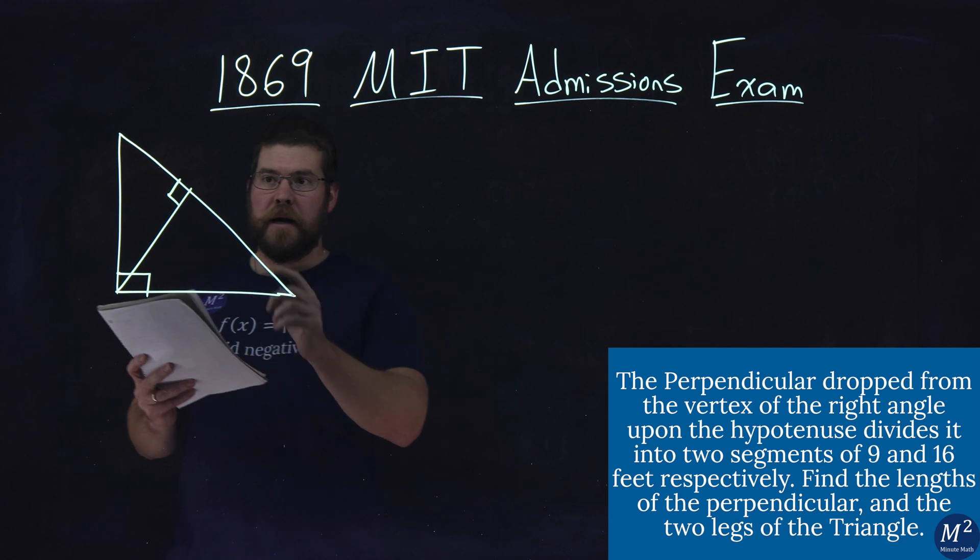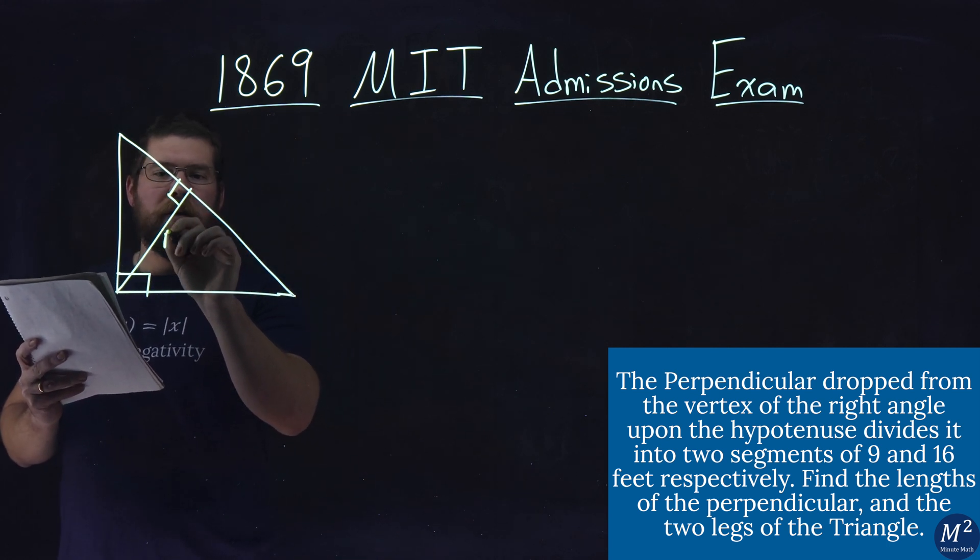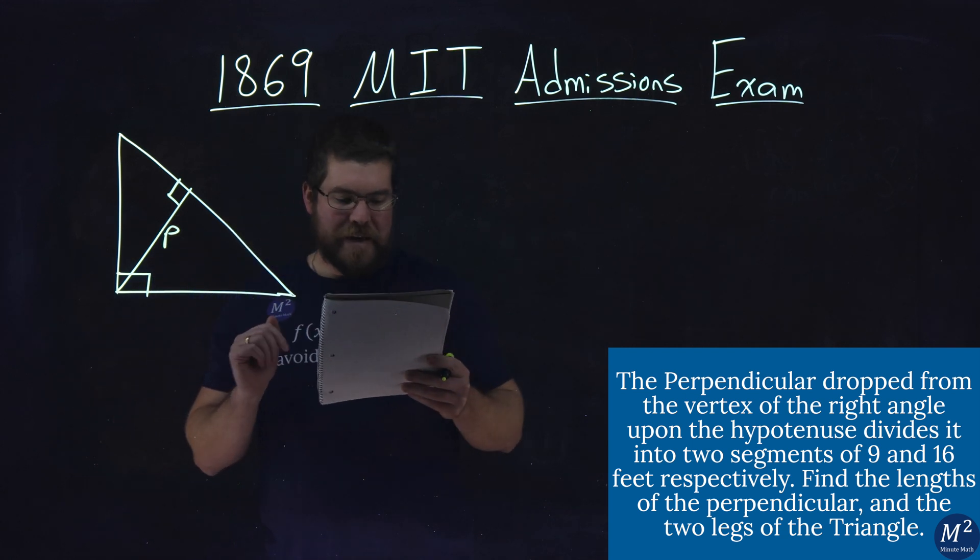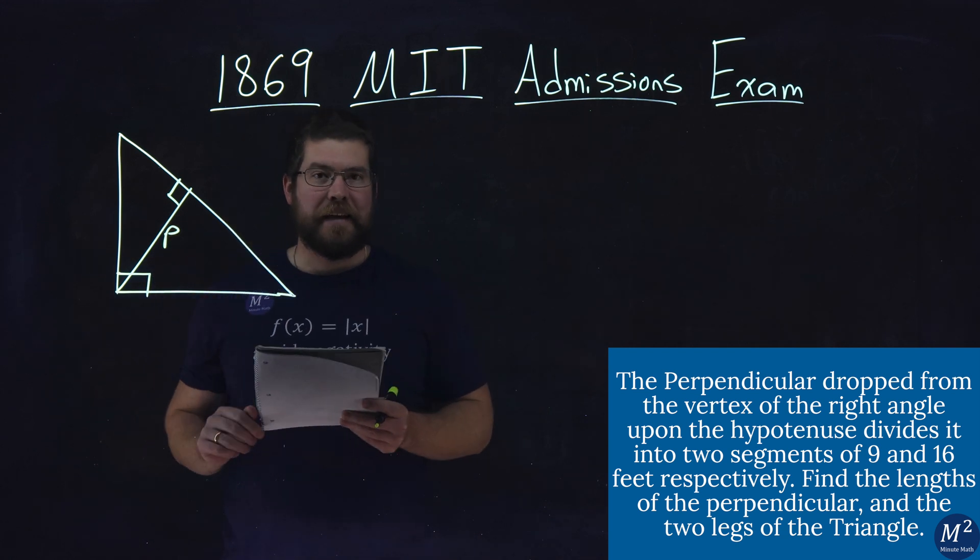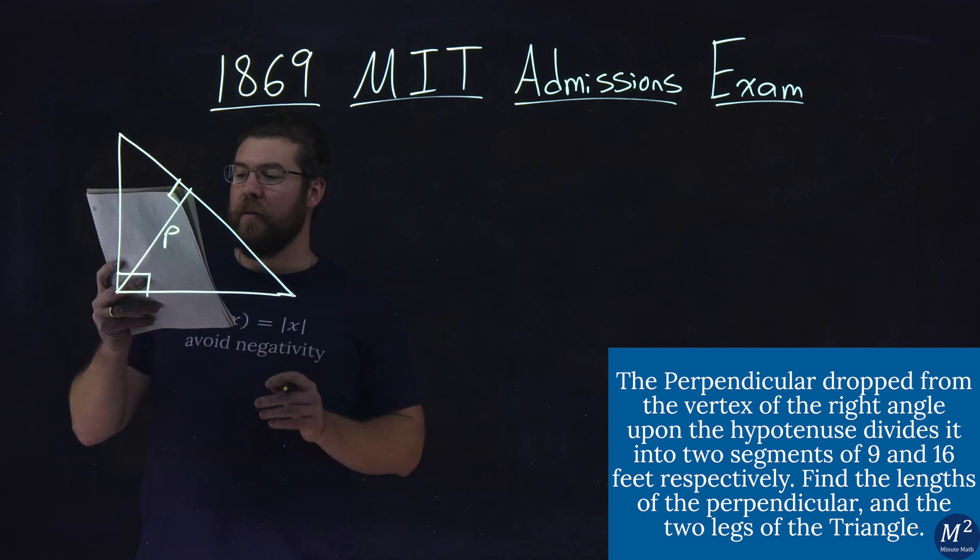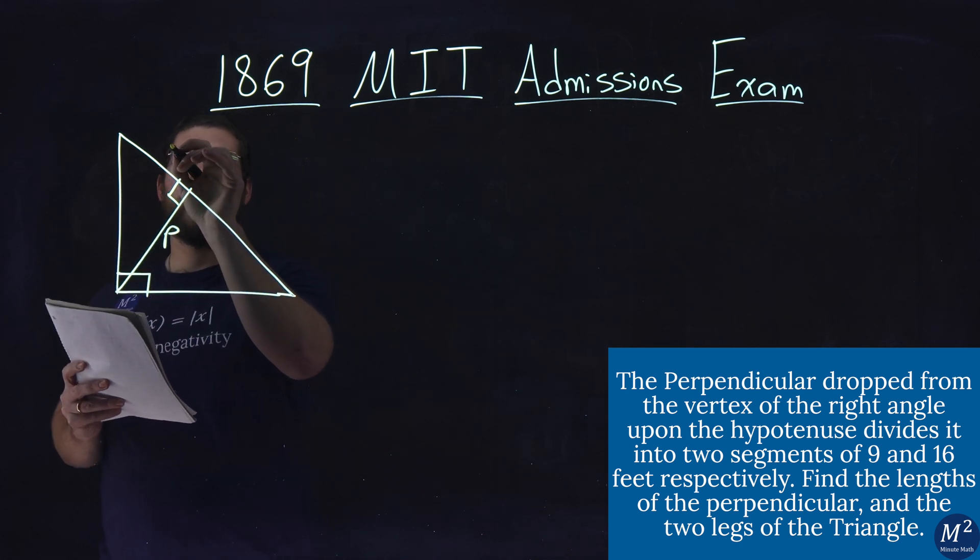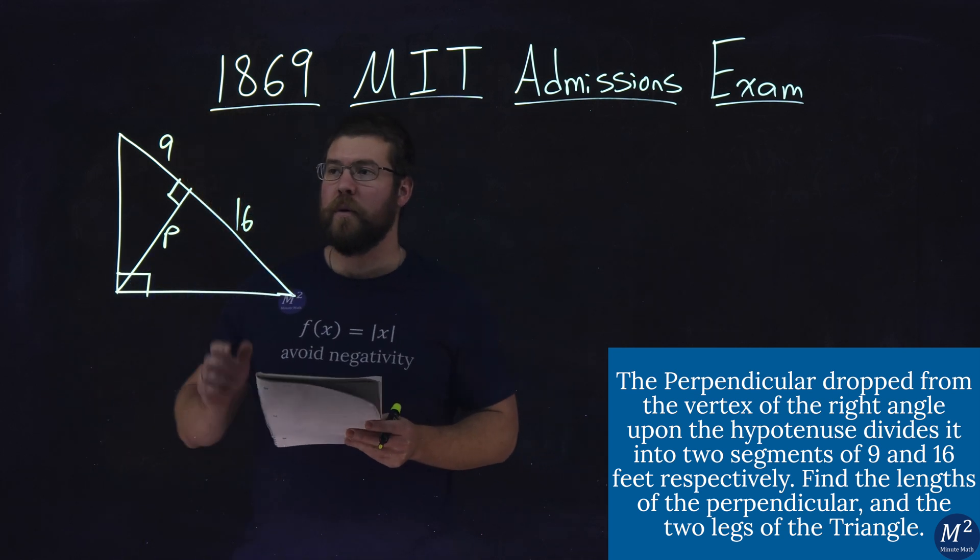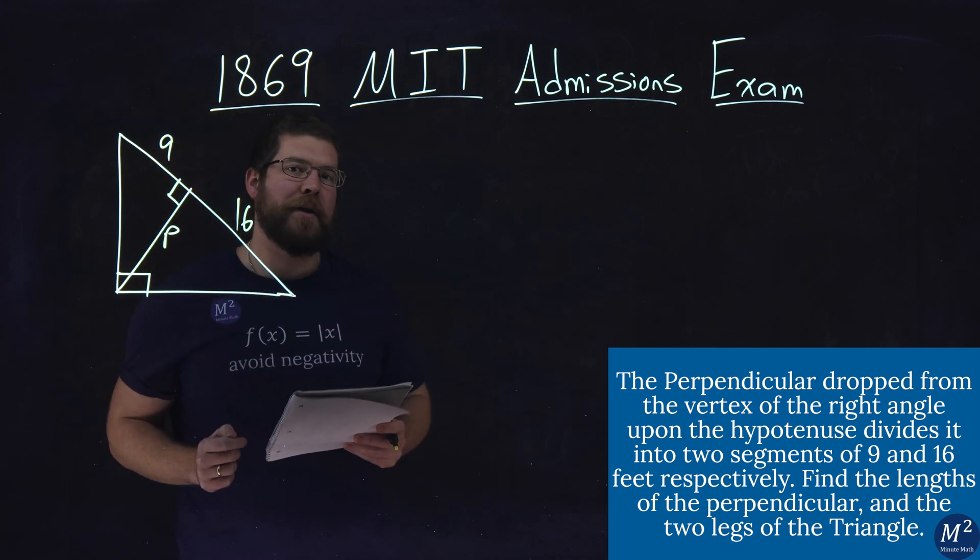This perpendicular bisector there, we call that, let's call that variable p. So we want to find what this variable p is, as well as the other two lengths of the smaller triangle, the legs there. They tell us that it divides it respectively to 9 and 16 feet. So we have 9, 16 here, and a perpendicular p.